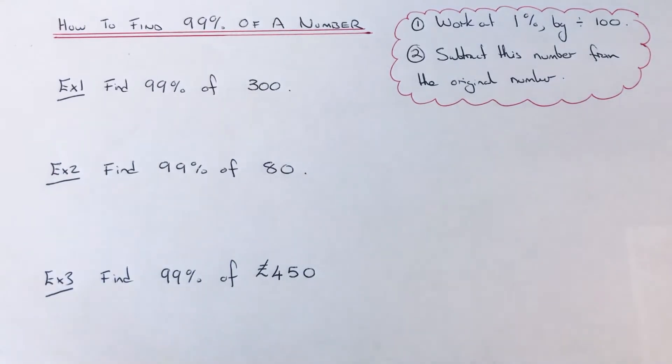Hi guys, welcome back. Today I'm going to show you a quick way to work out 99% of a number. You can do this in two steps. First of all, work out 1% of your number by dividing the number by 100. Once you have that 1% number, you just subtract the number from the original number and that will give you 99%.